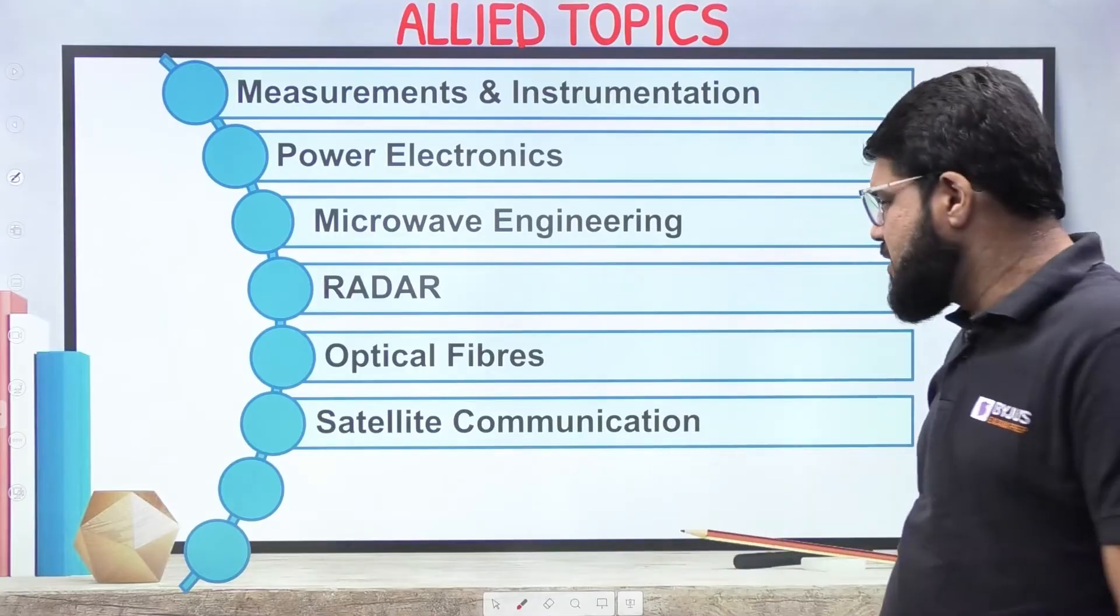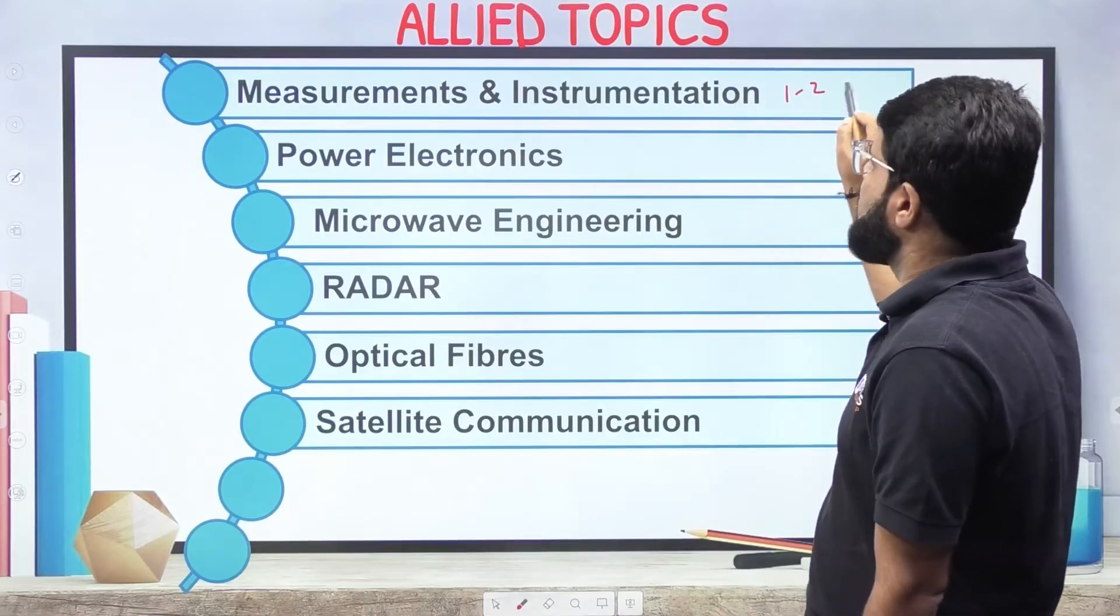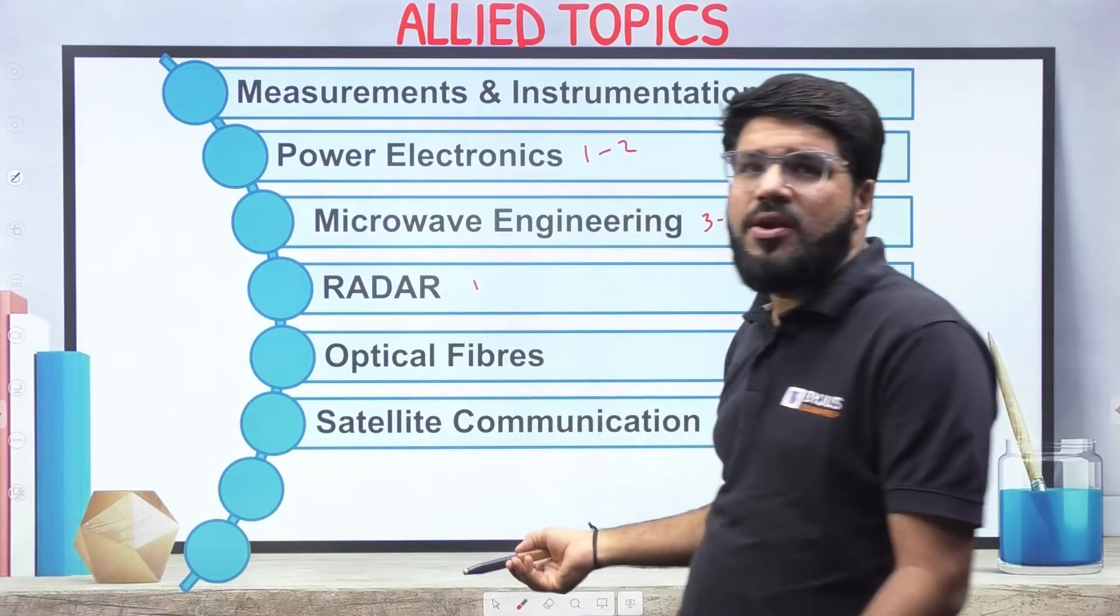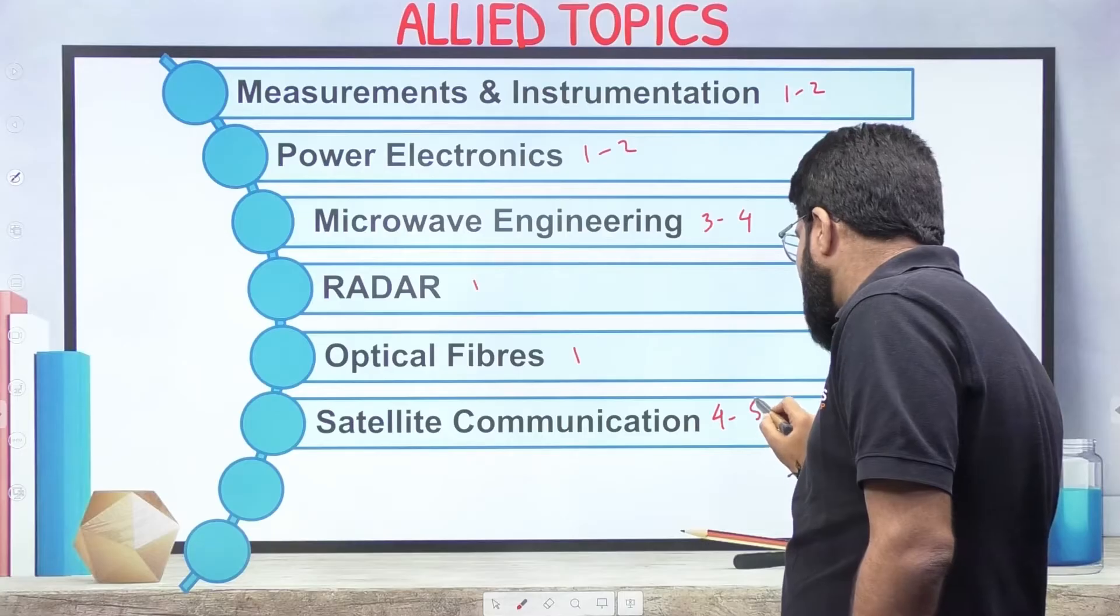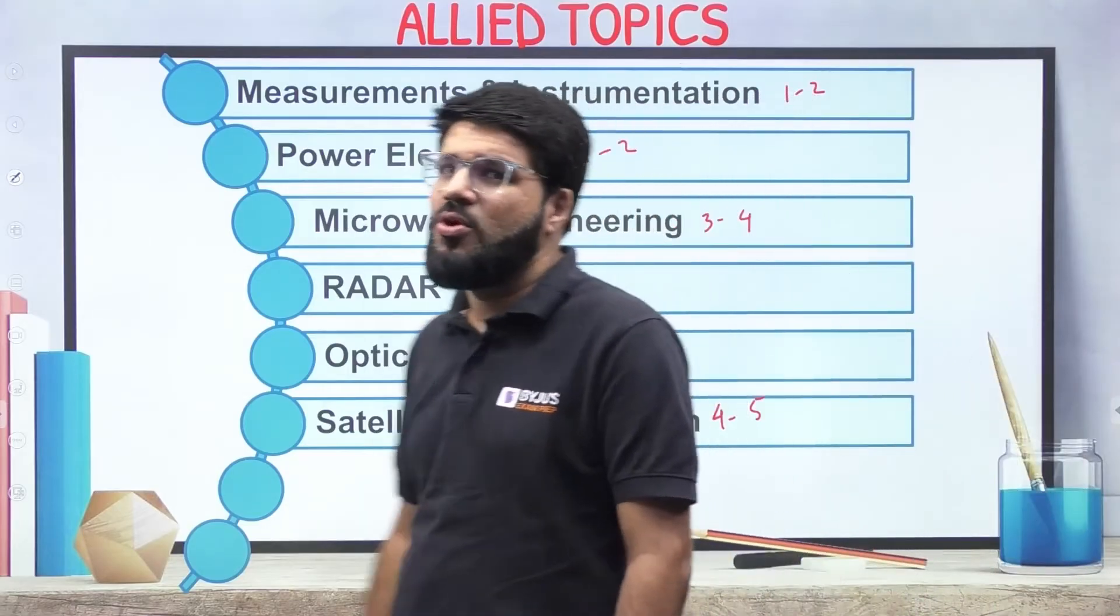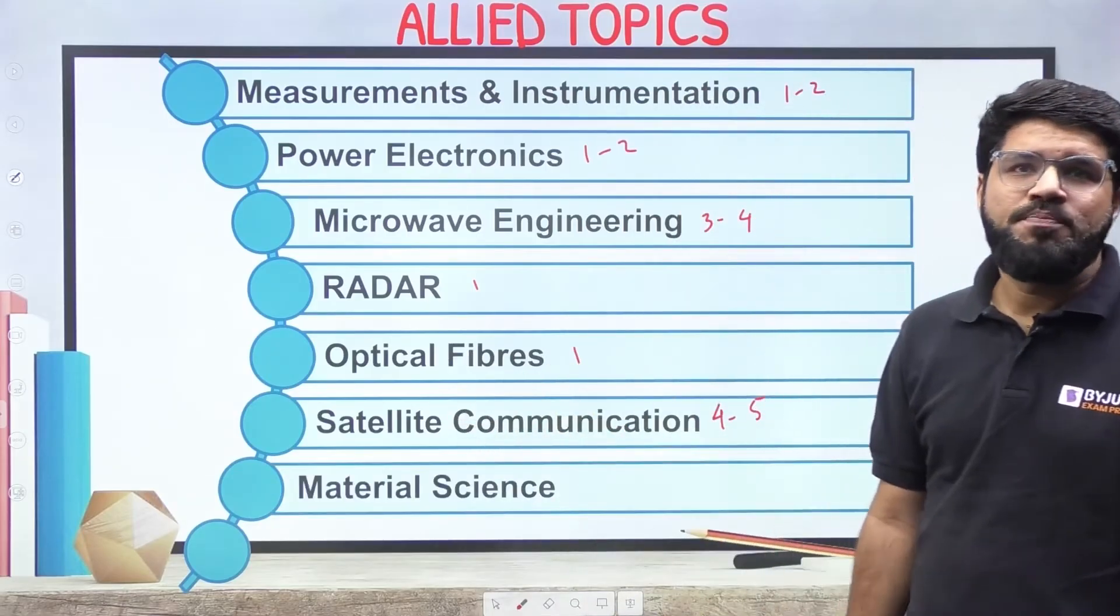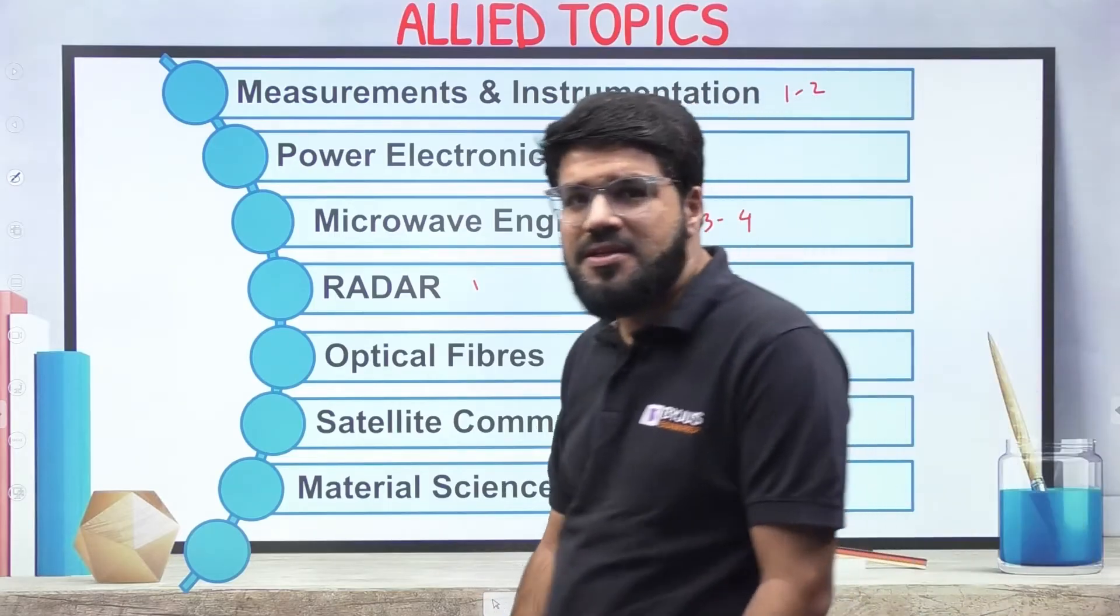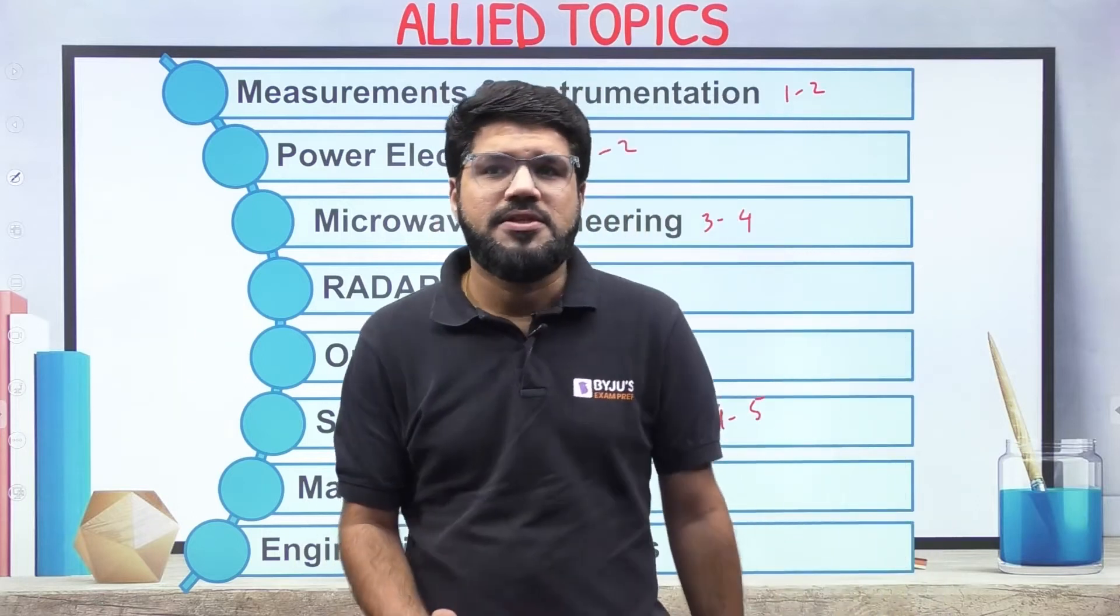If I talk about the frequency of questions - Measurement and Instrumentation just one or two questions, Power Electronics one or two, Microwave Engineering you can expect three to four questions, Radar maybe one question, Optical Fiber one question. Satellite Communication is definitely an area - separately from it you can expect four to five and it is worth it because you need to know the complete knowledge of orbits and satellites since you're going to work in ISRO. Material Science - depends year to year. Sometimes they don't ask, sometimes they randomly ask three to four questions. Worst case be prepared for one or two questions.